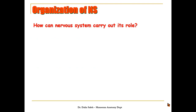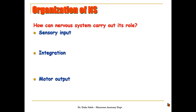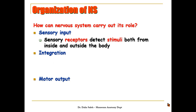Next we need to know how the nervous system carries out this role. It does so through three steps. First, it needs sensory input or information. Then it integrates this information and then comes out with a decision through the motor output. The information reaches the brain through sensory receptors which detect stimuli both from inside and outside the body.